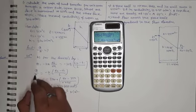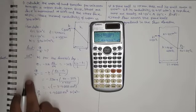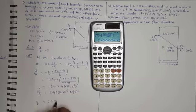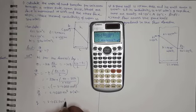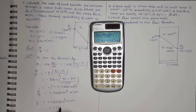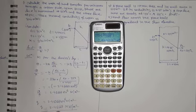We know that heat transfer per unit area is called heat flux, denoted by small q. Therefore, q equals 2.4667 times 10 to the power 6 watt per meter square. This can also be written in terms of mega: since 1 mega equals 10 to the power 6, the final answer is 2.4667 mega watt per meter square. This is the heat transfer per unit area flowing through the copper plate.